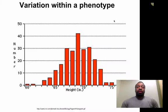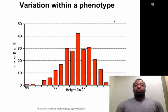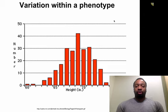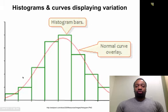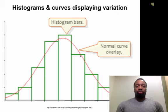Hey gang, we're going to talk about different types of natural selection. Before we begin, I just want to remind you of this type of graph called a histogram. It shows the variation of a certain trait — here we see the variation of height, and most people fall within a range with some outliers. You can also draw a curve over the histogram, and that curve shows us the same information. This will be important in a minute.